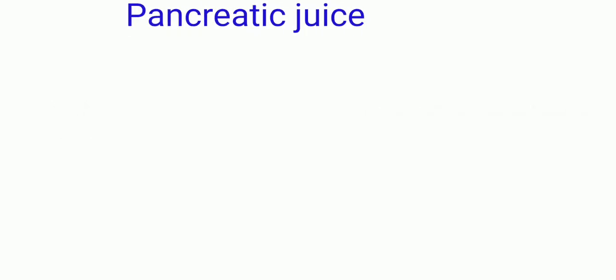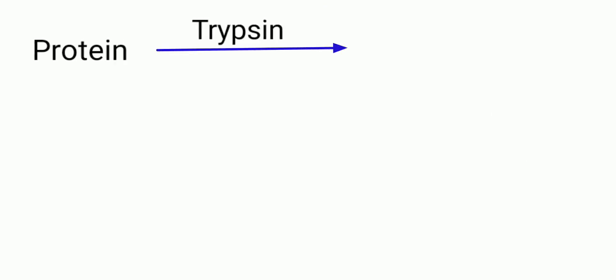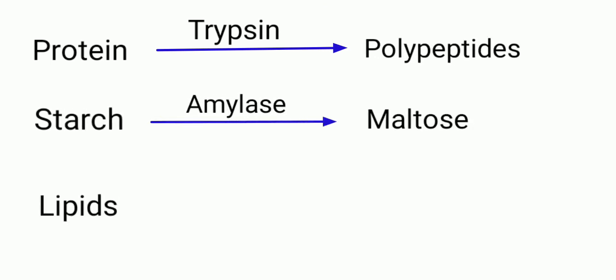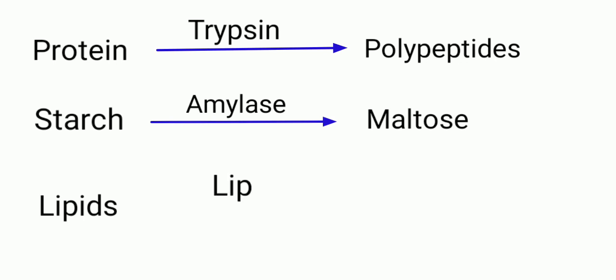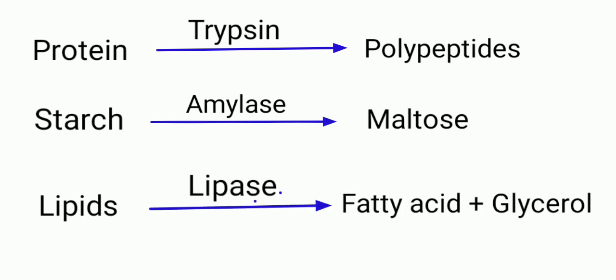There are three enzymes in the pancreatic juice: trypsin, amylase, and lipase. Trypsin converts protein molecules into polypeptides. Amylase converts starch into maltose. Lipase breaks down lipids into fatty acids and glycerol.